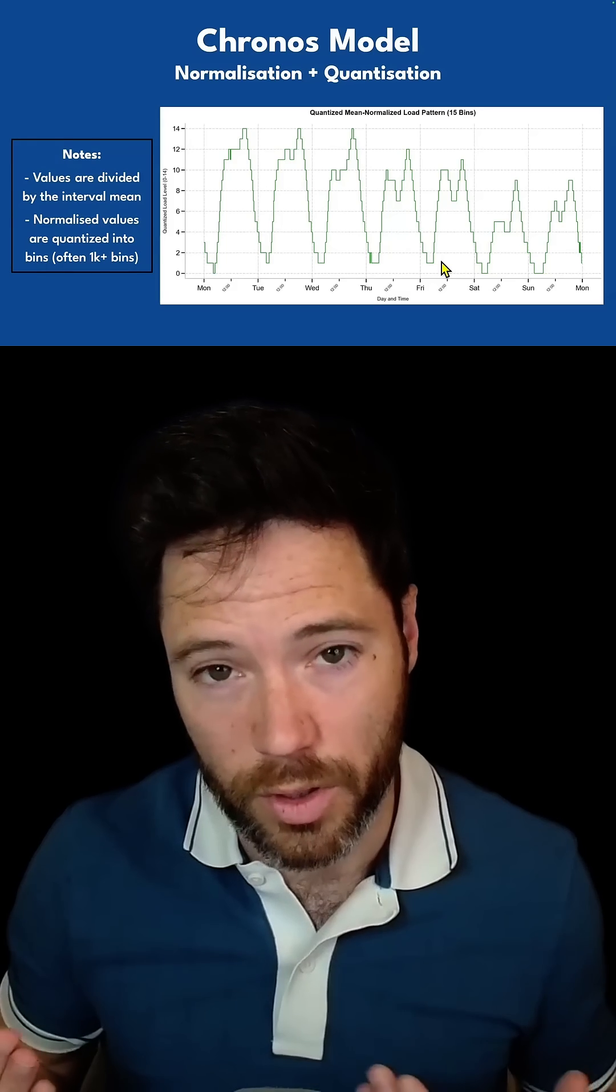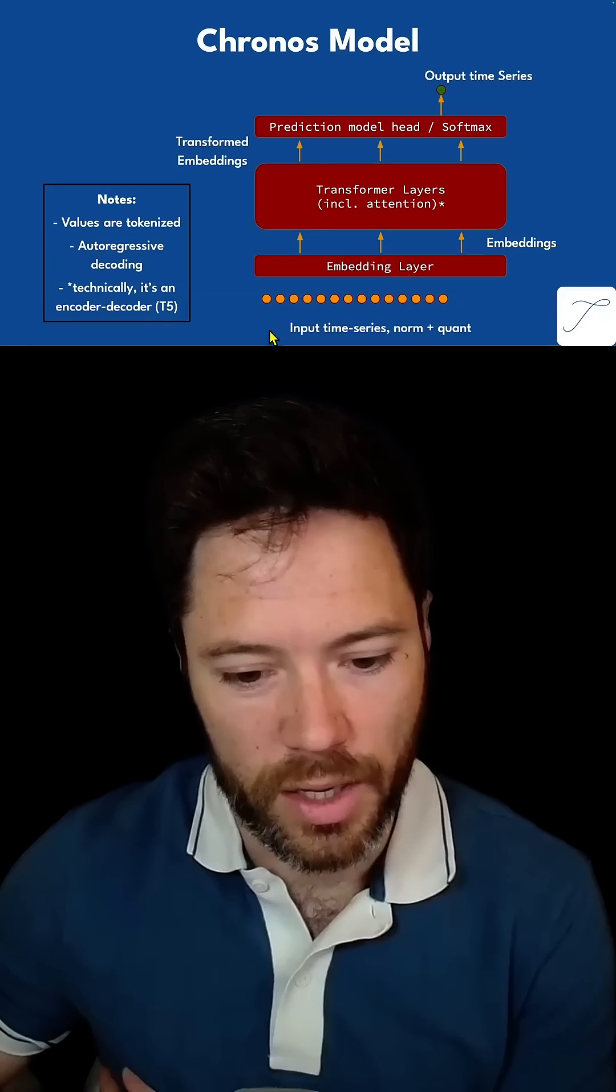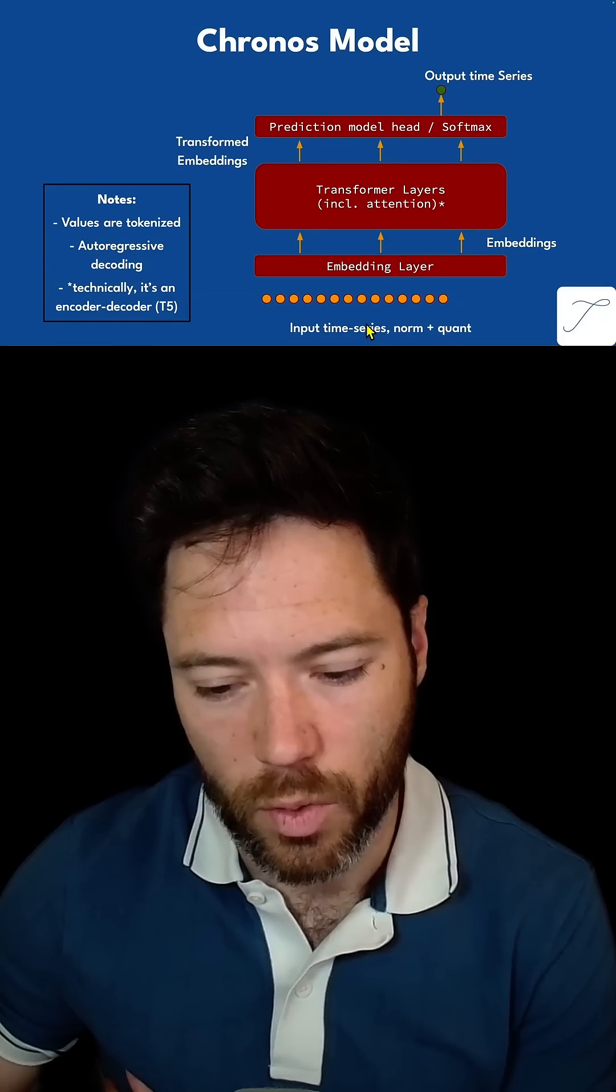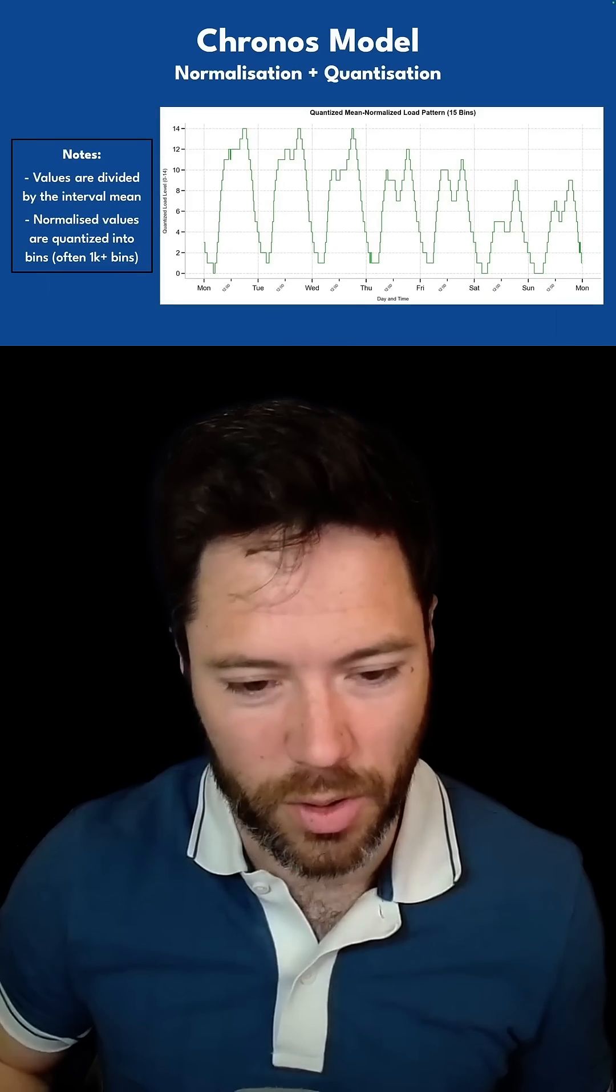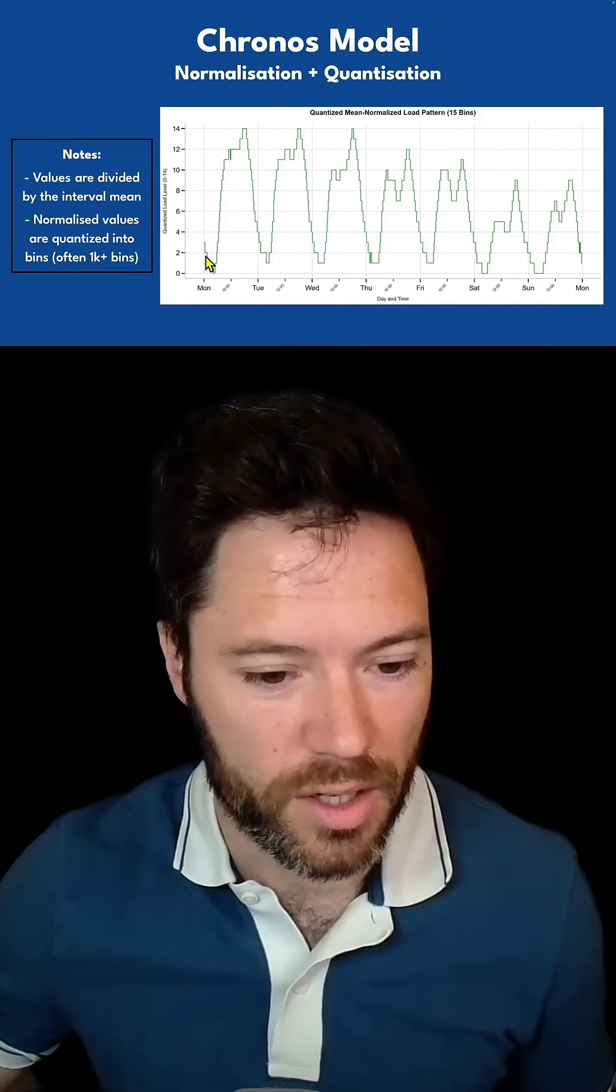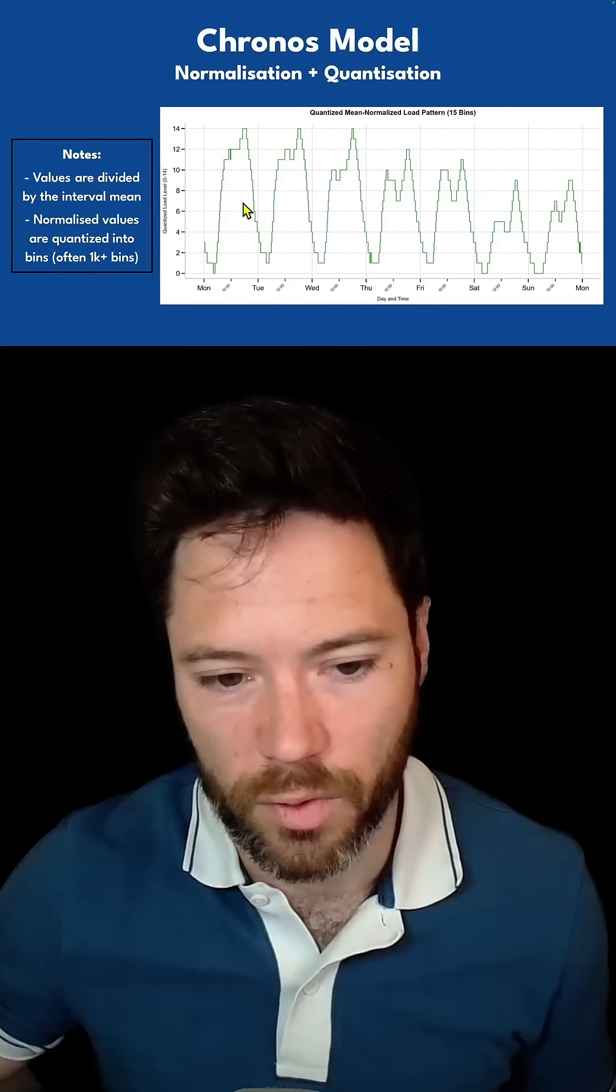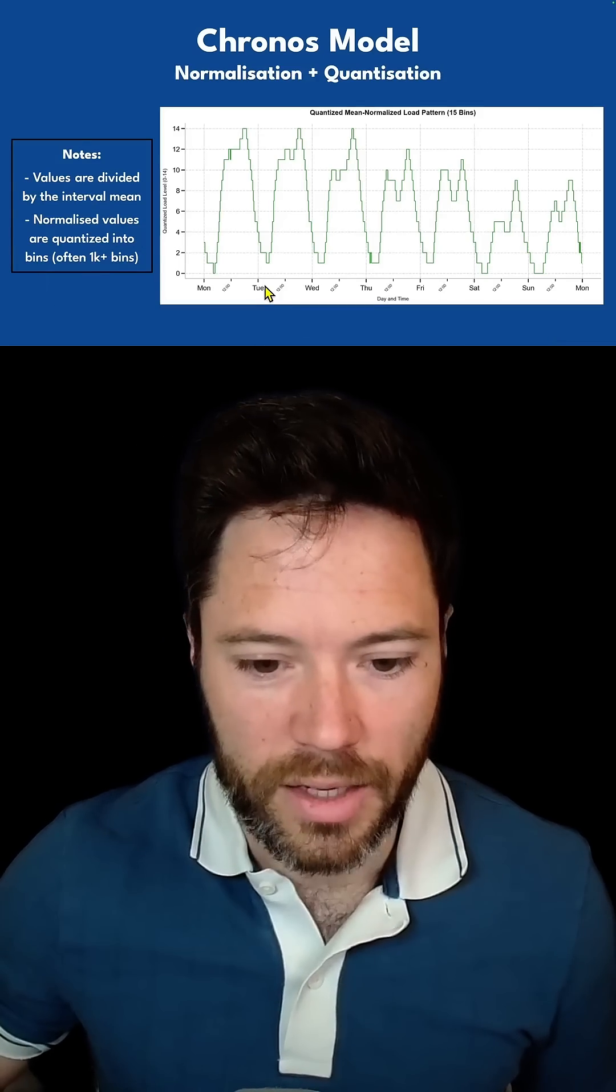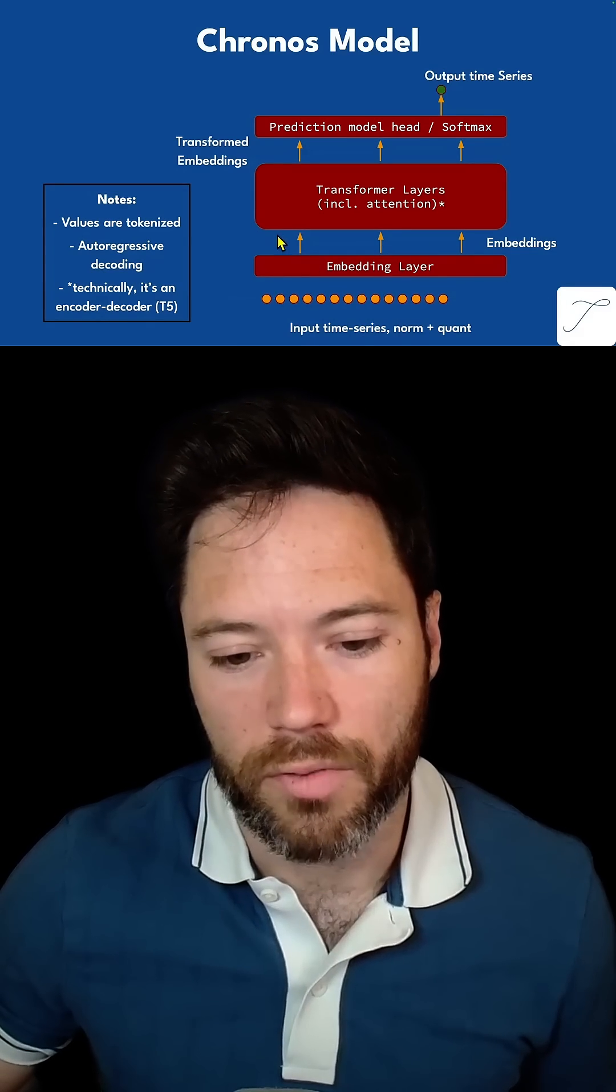We're able now to run the model in the same way we would a large language model. We take in the input time series, normalize and quantize it, and now each of these inputs is a token. If there are 15 quantization levels, it'll be a token, either 0, 1, 3, or 4. These tokens then, as in a language model, go through an embedding layer and they're converted into vectors.